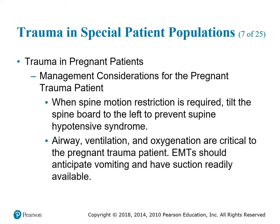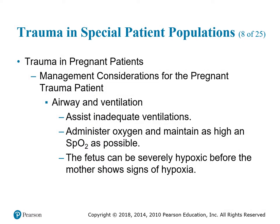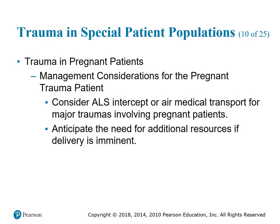Management considerations for the pregnant trauma patient: when spine motion restriction is required, tilt the spine board to the left to prevent supine hypotensive syndrome. Airway, ventilation, and oxygenation are critical. Anticipate vomiting and have suction readily available. Assist inadequate ventilations and administer oxygen. The fetus can be severely hypoxic before the mother shows signs of hypoxia. Check for major bleeding; absorb vaginal bleeding with a pad — do not pack the vagina. Anticipate and treat for shock. Consider ALS intercept or air medical transport for major trauma. Anticipate the need for additional resources if delivery is imminent.